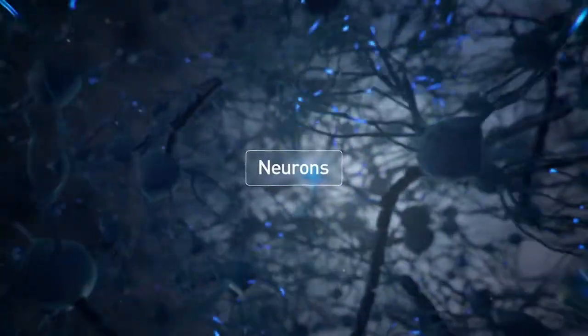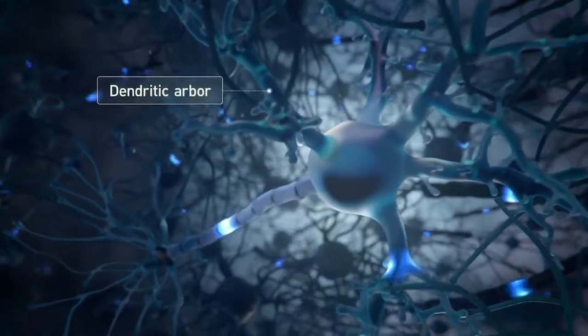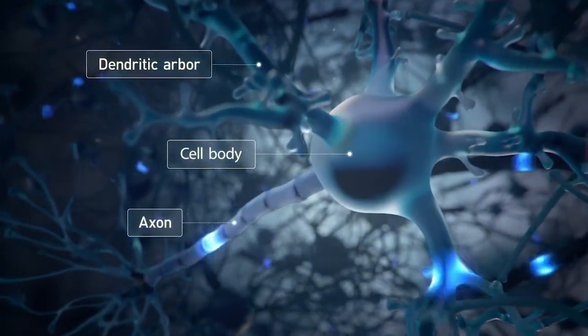Your brain is composed of nearly 100 billion cells called neurons. Neurons come in many complex shapes, but generally they have a dendritic arbor, a cell body called a soma, and an axon.